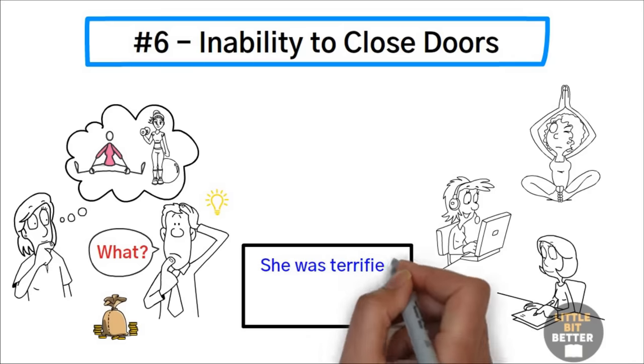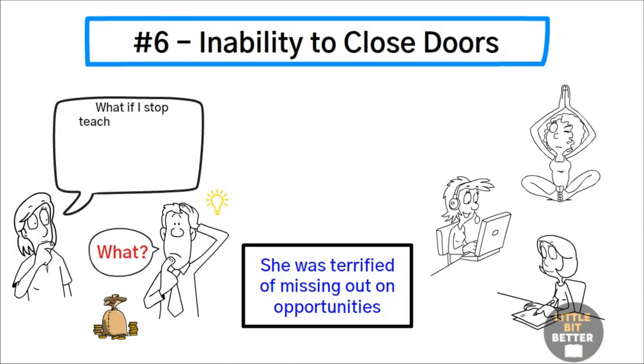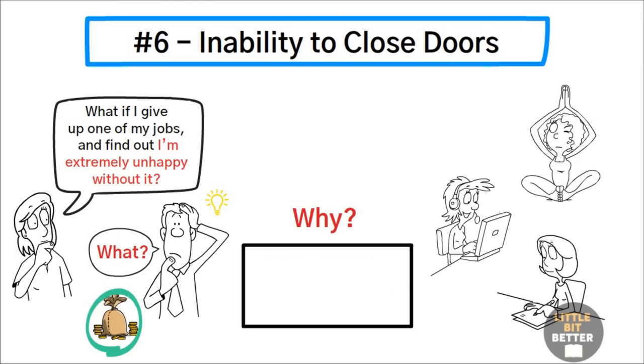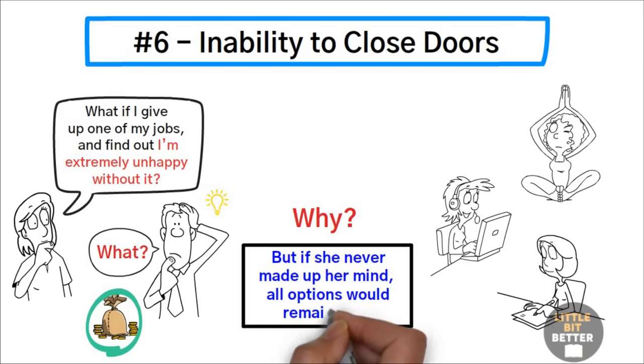She was terrified of missing out on opportunities. She said, what if I stop teaching yoga and two or three months from now, I find out yoga is my real vocation? What if I give up one of my jobs and find out I'm extremely unhappy without it? She was not worried about the bills. She just couldn't stand the idea of having to choose. Why? Because choosing one thing meant giving up a thousand others. But if she never made up her mind, all options would remain open.